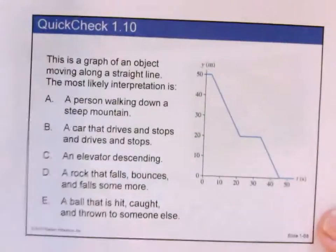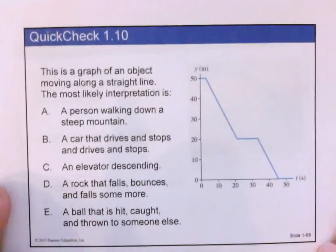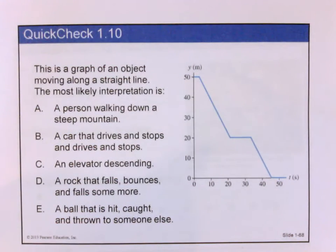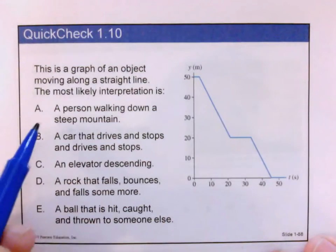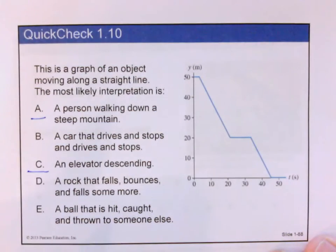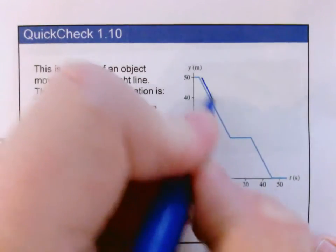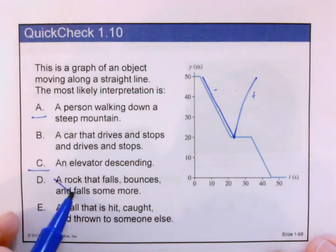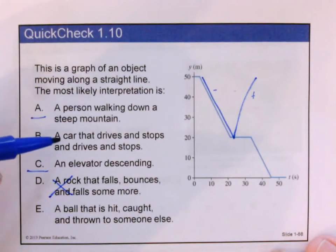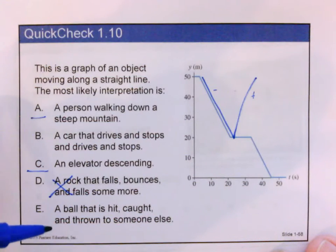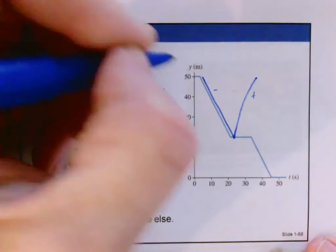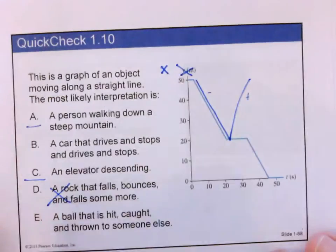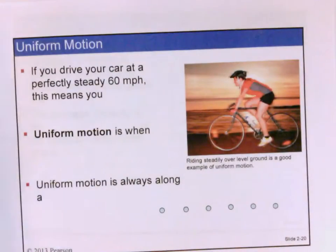We ended on the slide discussing what possible stories could match the motion of the graph. We talked about it might be a person walking down a steep mountain or an elevator descending. A rock falling and bouncing would look different because you'd have a change in direction. A car driving, stopping, and driving again, or a ball hit, caught, and thrown would be moving in the horizontal direction. So for those cases we would need to switch the y-axis to say something about horizontal motion rather than vertical.